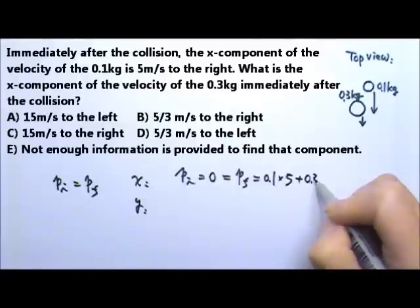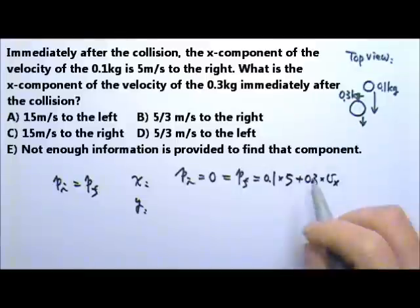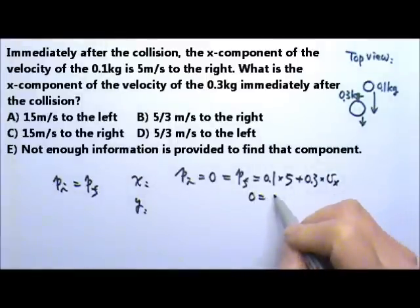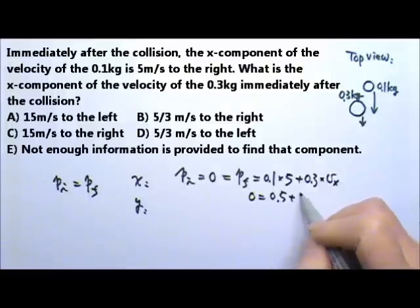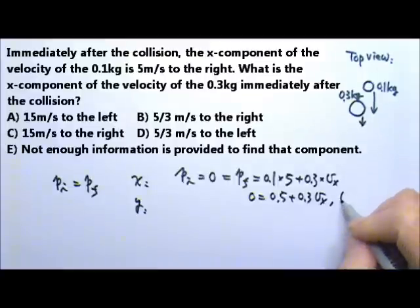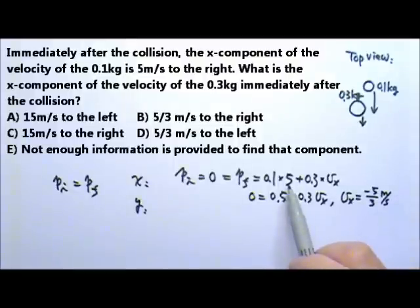The 0.3 kg ball may have an X component velocity. Since this equals 0, so it's 0 equals 0.5 plus 0.3 VX. If I move this over to the other side and then divide by 0.3 on both sides, I will get VX is negative 5/3 meters per second.